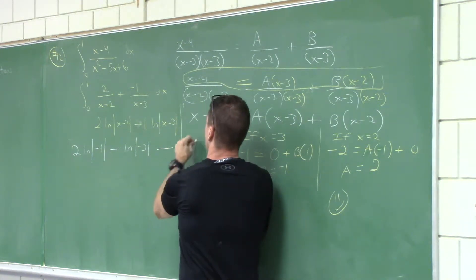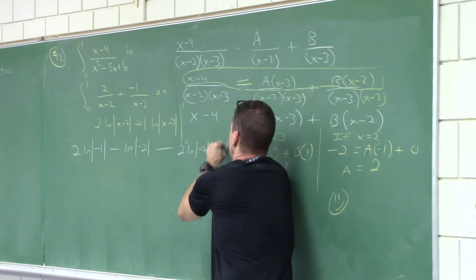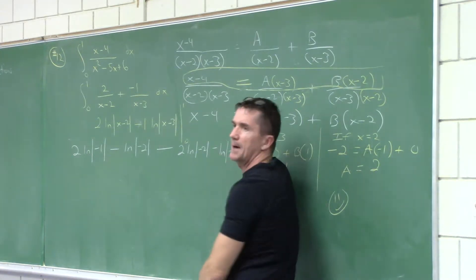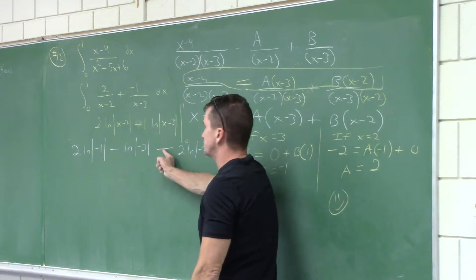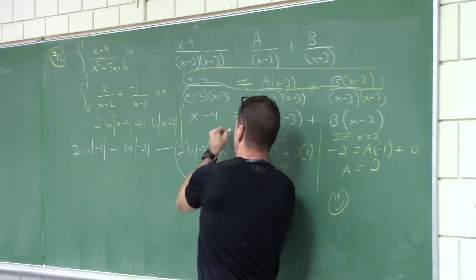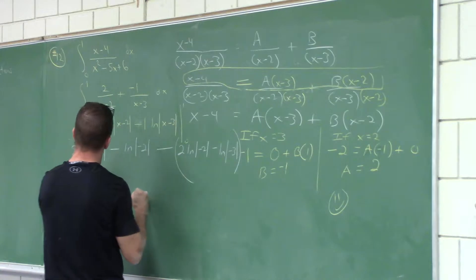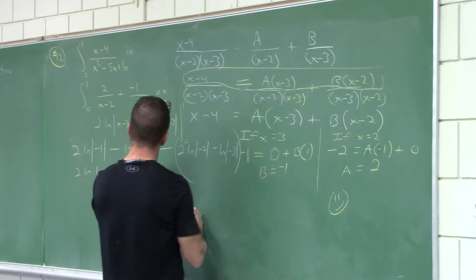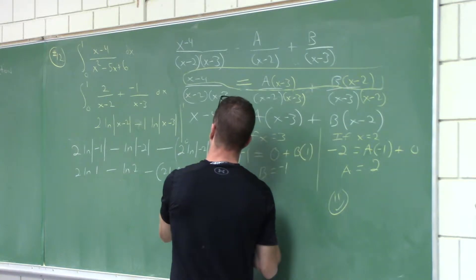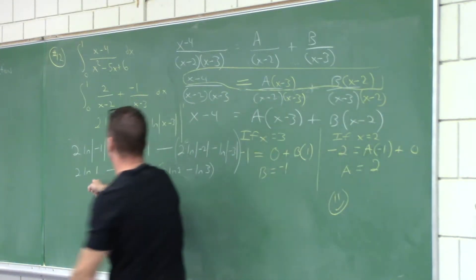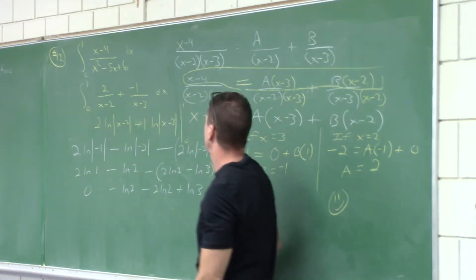Plugging in 0: 2·ln|-2|, minus... zero minus 3 is negative 3. That subtraction sign must distribute all of this. Student says plus ln 3. Finishing up: 2·ln(1) equals 0. Minus ln 2, minus 2·ln 2, plus ln 3. That first term is 0.